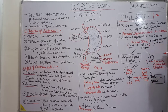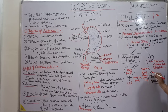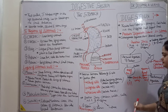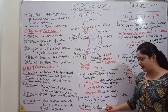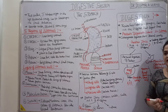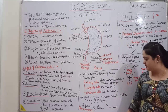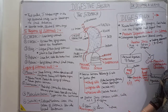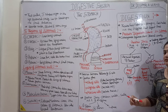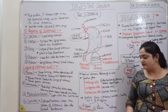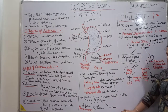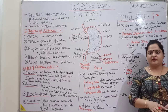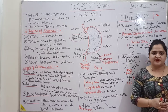Mechanical digestion involves muscular contractions that break down the food. Next, rennin — rennin splits milk protein. And lipase is responsible for fat splitting. Thank you viewers, please subscribe to my channel.